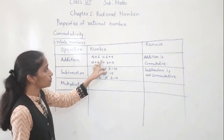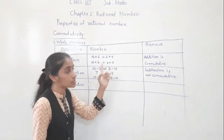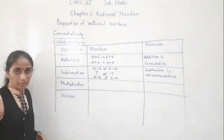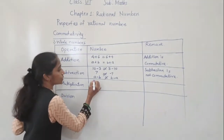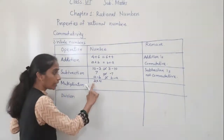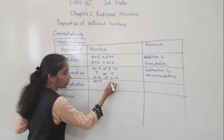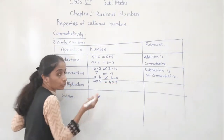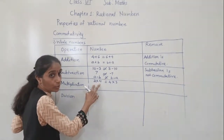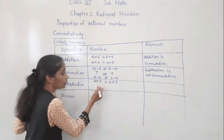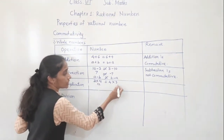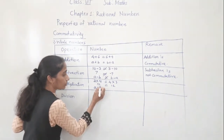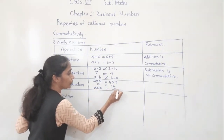For addition, a plus b is equal to b plus a — even if we change the order we get the same answer, so addition is commutative. But subtraction is not commutative. Now we will see for multiplication. Suppose 3 multiplied by 4 — that is a into b is equal to b into a, so 4 into 3. Again we are going to get the same answer even if we change the order.